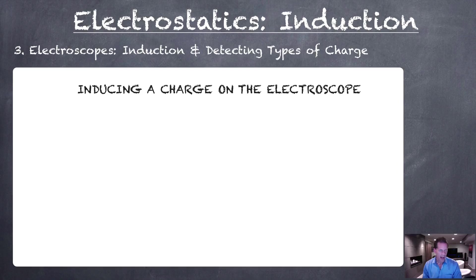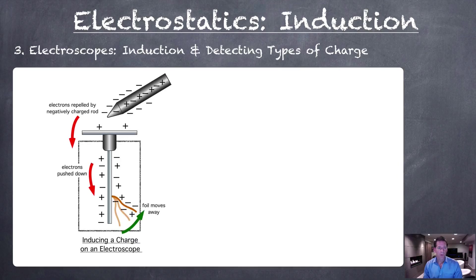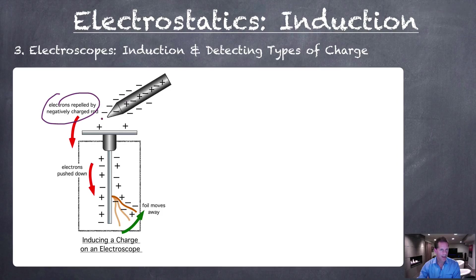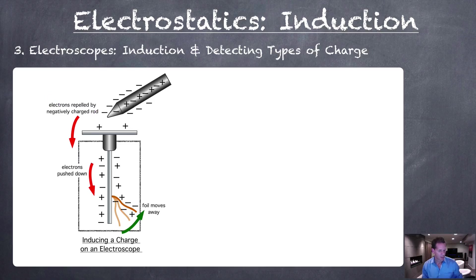Can we illustrate the same principle of induction on the electroscope? What would happen is we bring our charged rod near the electroscope — notice it's not touching. It's a negative charge, so it should repel the electrons in the top of the electroscope and push those electrons down to the bottom. Please notice that we still have ten positives and ten negatives — we still have a neutral electroscope. But just like our other illustrations, we have an induced charge down on the bottom of the electroscope, and in theory the foil should move away. Let's see if this happens in action.